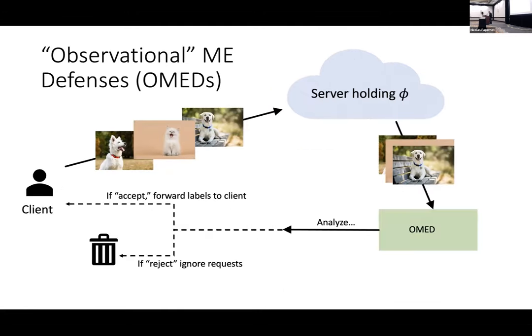A third type of defense — and the focus of this work — is what I'm calling an observational defense, or OMAD. In an OMAD, a server holding the model takes a bunch of queries from the client and forwards them to the OMAD, whose job is to analyze that set of queries and output a decision: accept or reject. If it accepts, the server forwards the labels back to the client; if it rejects, it bins those requests and ignores the client.